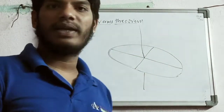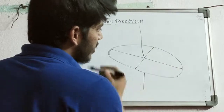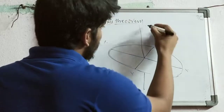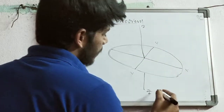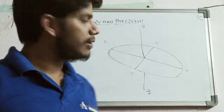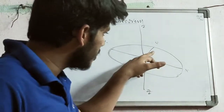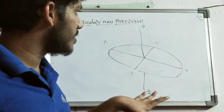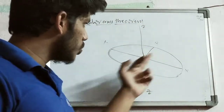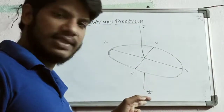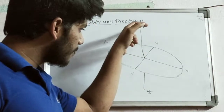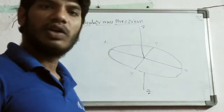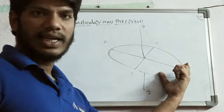So these three axes are perpendicular to each other. Among these three, two axes are in the plane — the x-axis and the y-axis — and the third axis, which is the Z-axis, is passing through the plane and is perpendicular to these two in-plane axes.